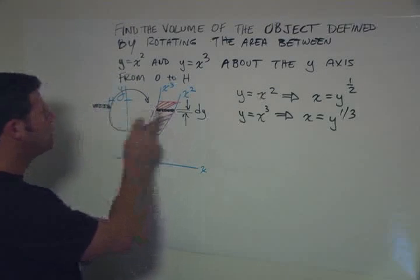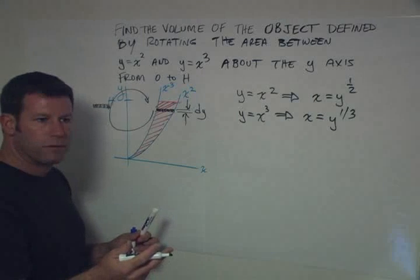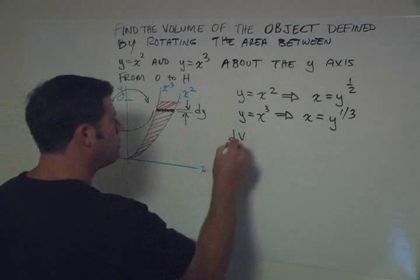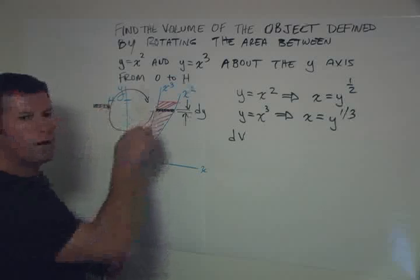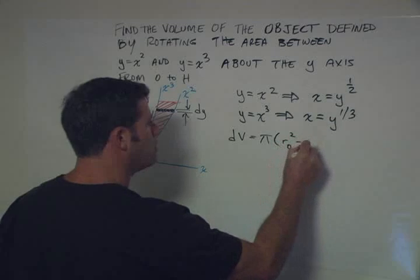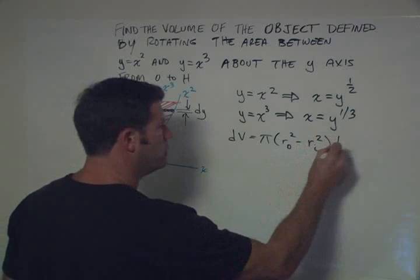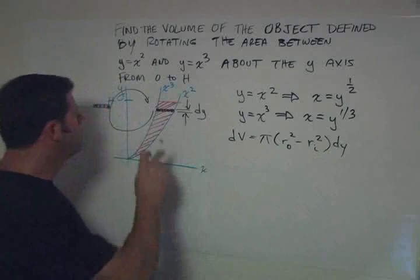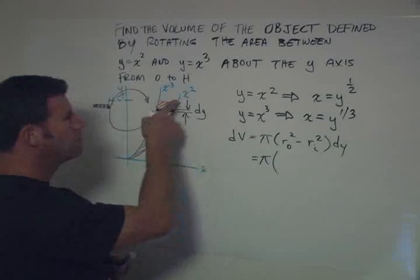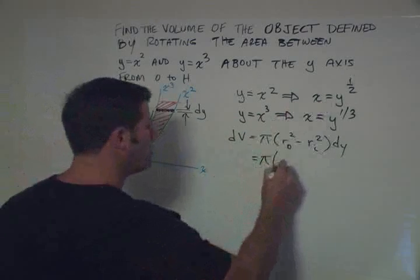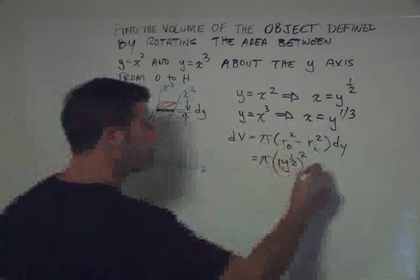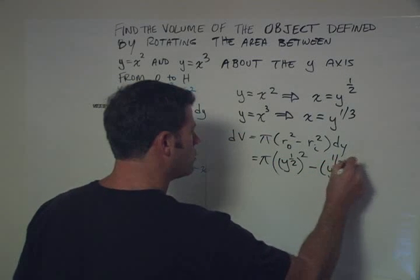And we know that the volume, then, is going to be the pi r squared of the difference in the radii. So we can say that dv, v being volume, so the volume of this little washer is going to be pi times r outer squared minus r inner squared, dy, because we have that thickness. So it's going to be equal to pi, and r outer squared is going to be x squared, rewritten in terms of y. So y to the one-half squared minus the inner, y to the one-third squared, dy.